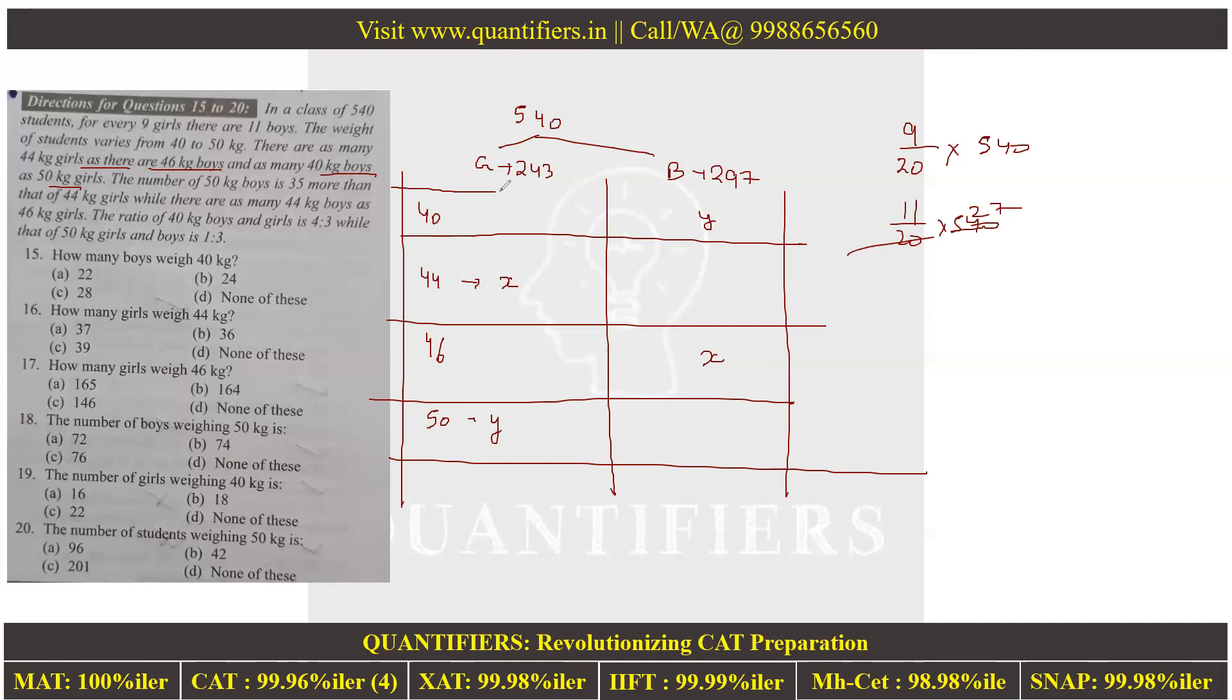In real time I won't do all these aesthetics, but just to make it clear. The number of 50 kg boys is 35 more than 44 kg girls, while there are as many 44 kg boys as 46 kg girls. The ratio of 40 kg boys and girls is 4:3. So if boys is y and girls is a, then a = 3/4 y.